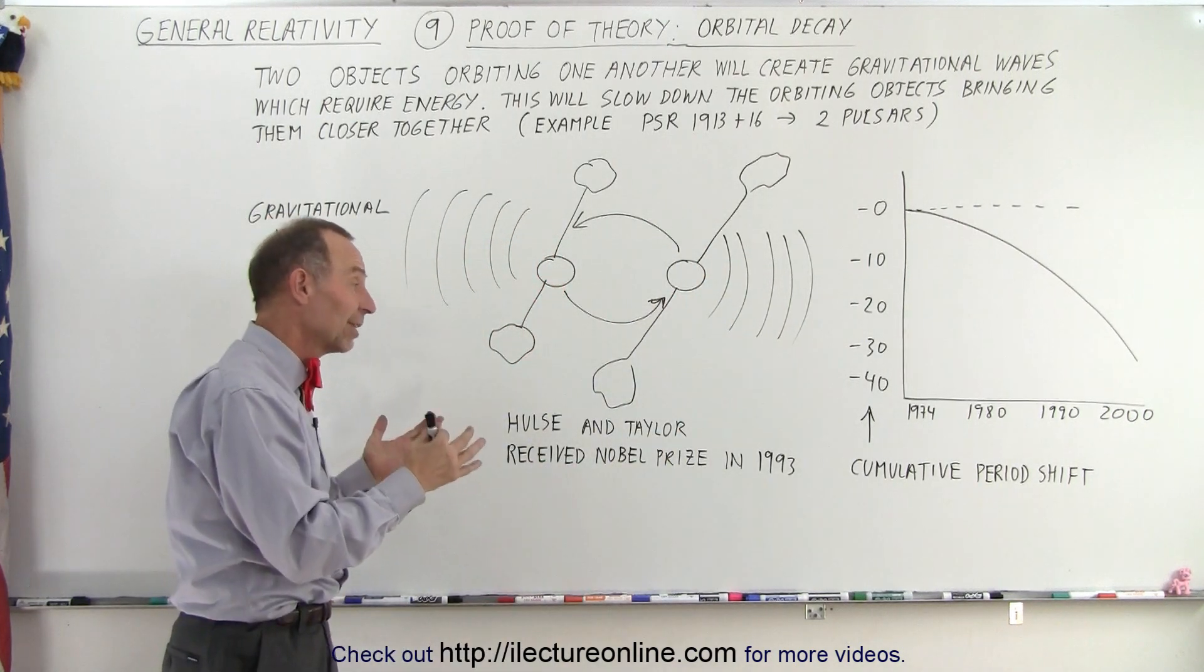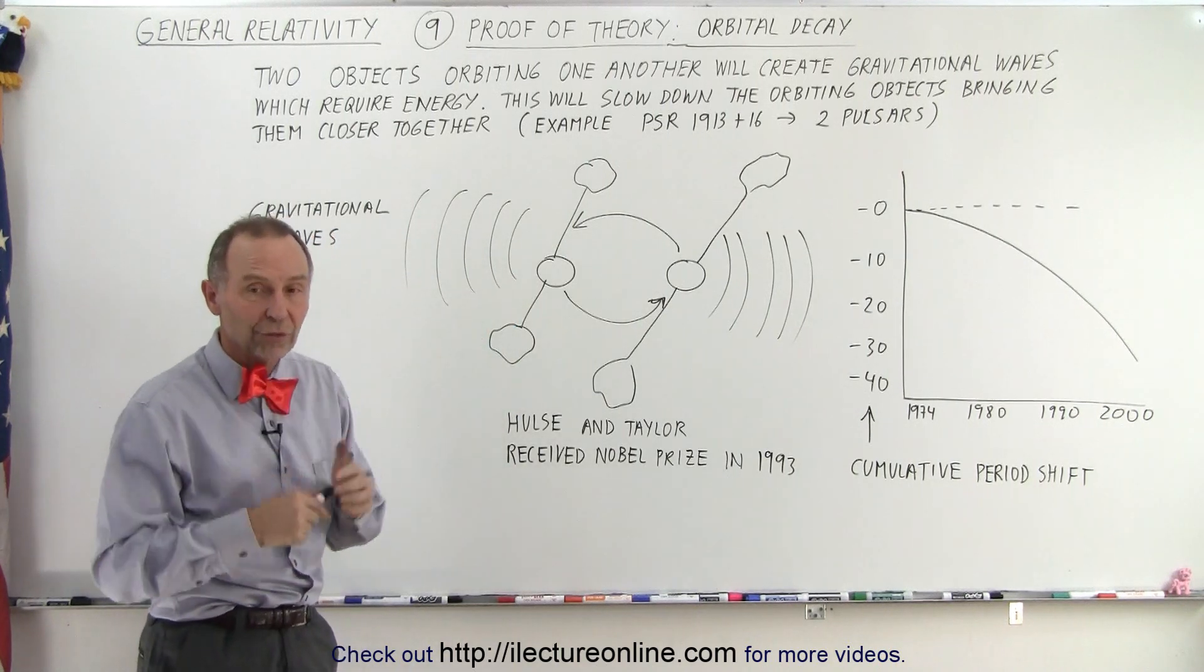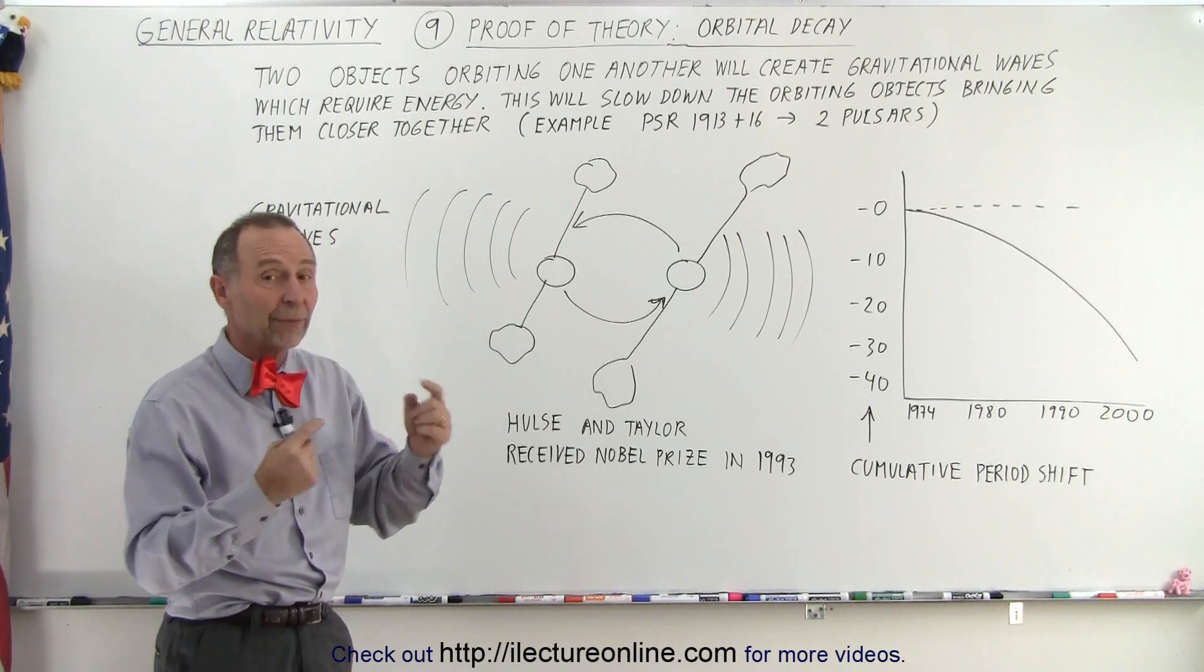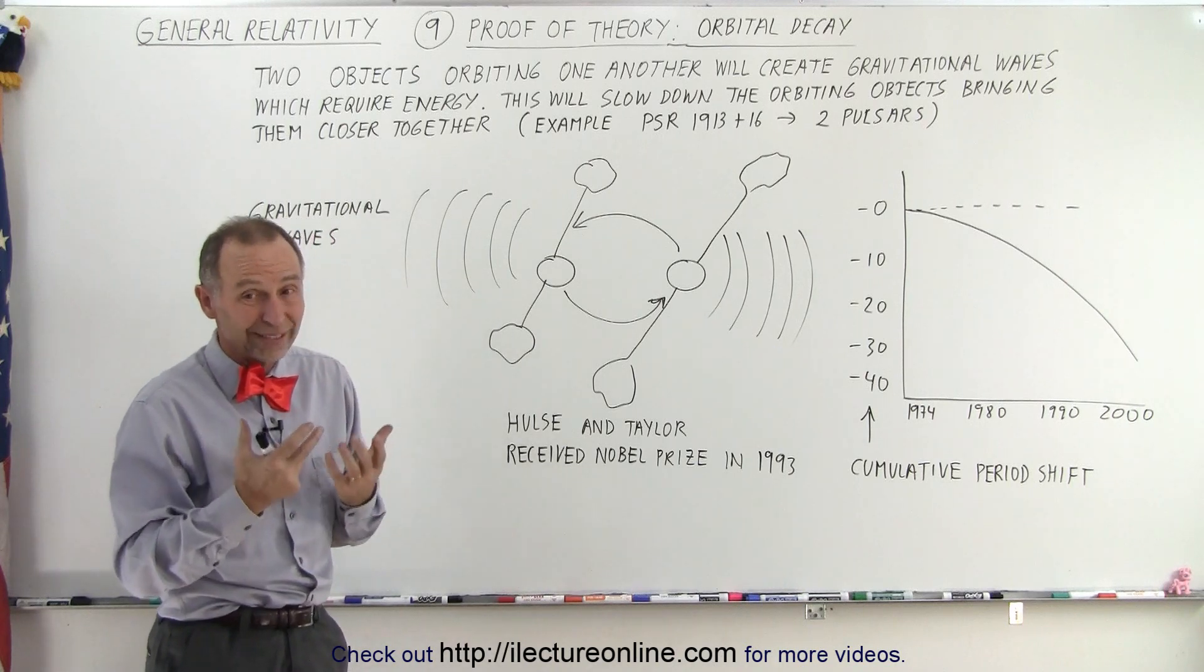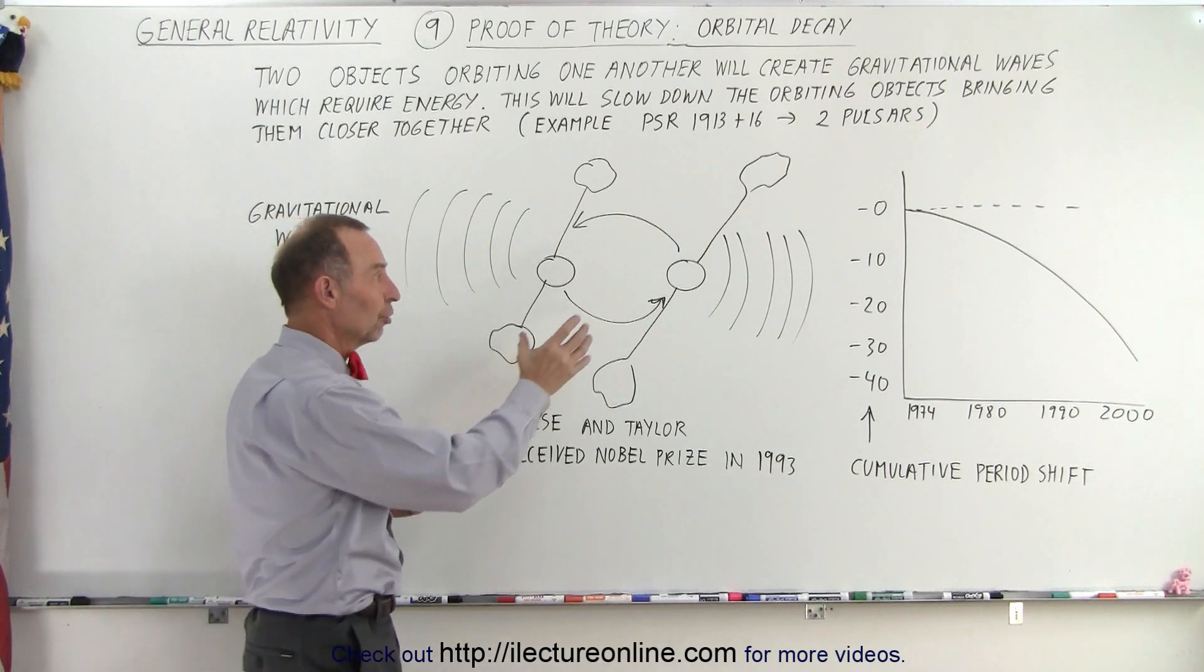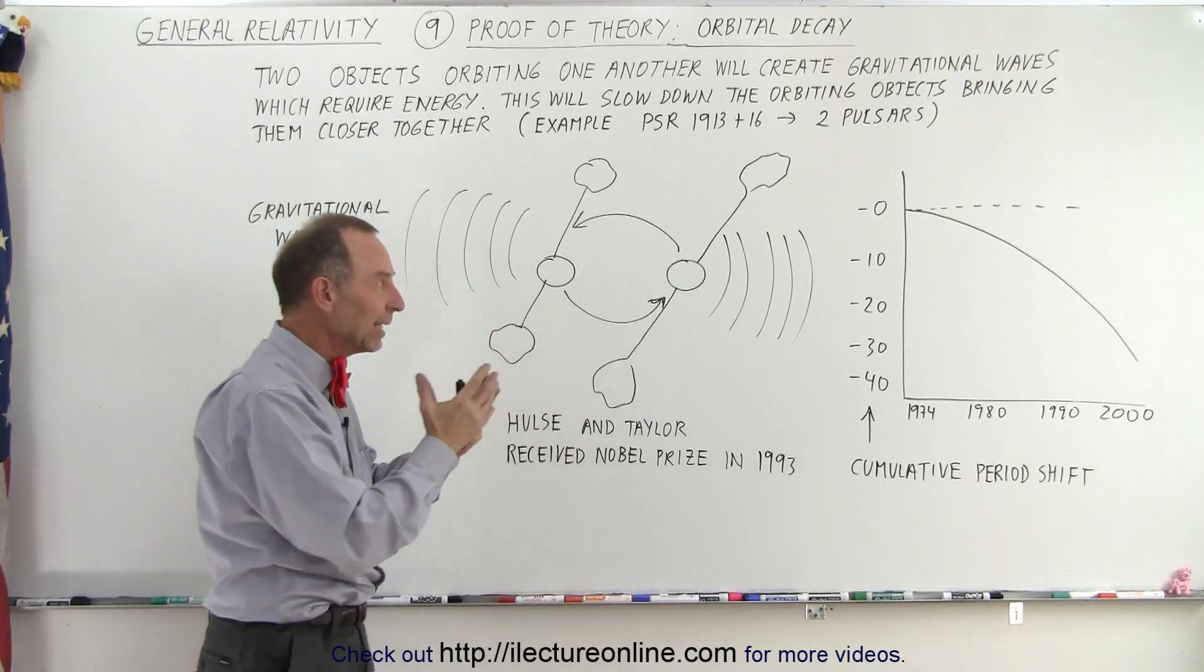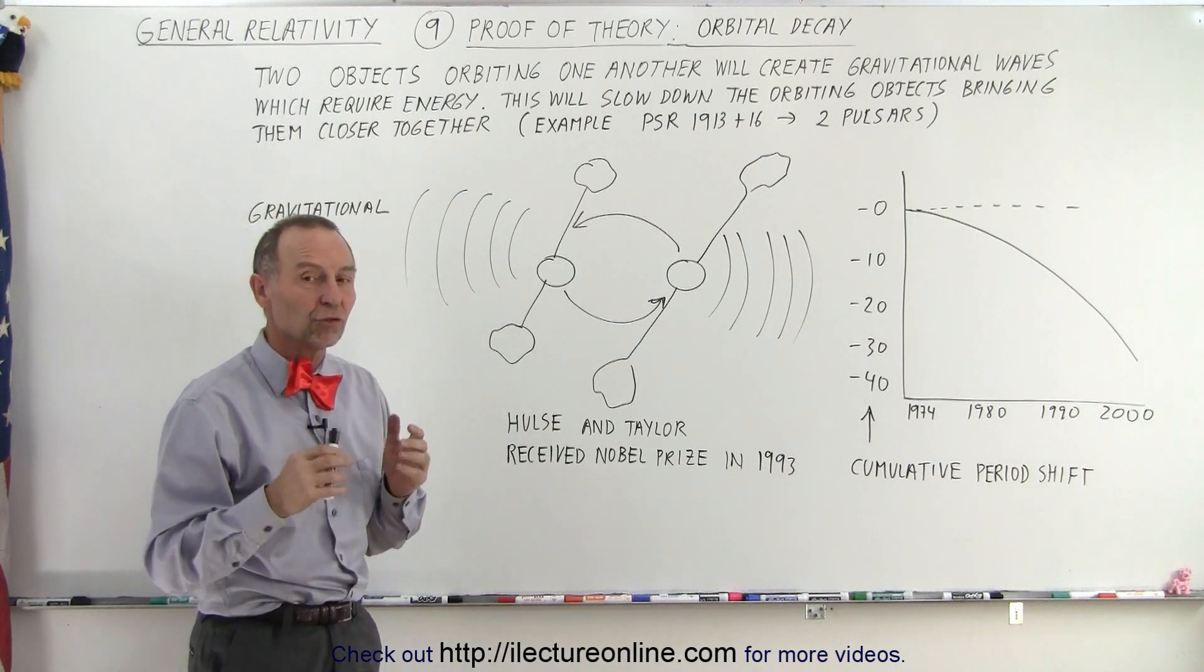And those gravitational waves can then be measured in terms of the slowdown of the rotation of these pulsars. Now, if those were black holes going around one another, and they had either more mass than neutron stars, more density, and higher gravitational attraction, and therefore stronger bending of space, you would then notice those gravitational waves even stronger.